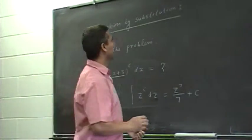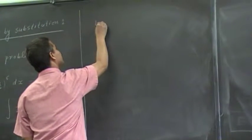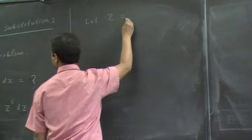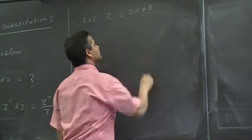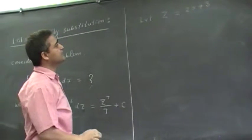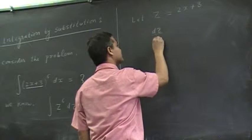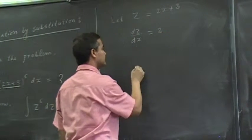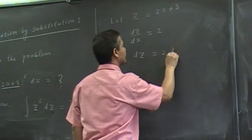Then how do we do that? Let's see. Let z equals 2x plus 3. If z equals 2x plus 3, you know dz over dx is 2 and dz will be 2dx.